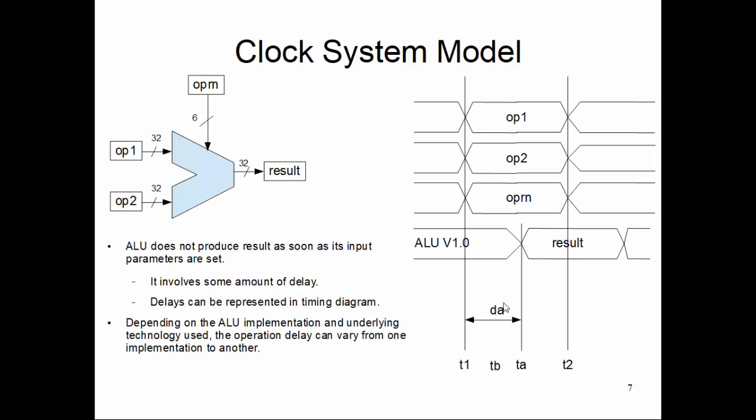All right, so we already know about this ALU. Now the point you need to understand is that the ALU, since it is a physical component, an electrical system, does not produce results as soon as you provide it with two operands and an operation. There is a certain gap in time - we call it delay. There's a certain delay in time before it can compute a result.